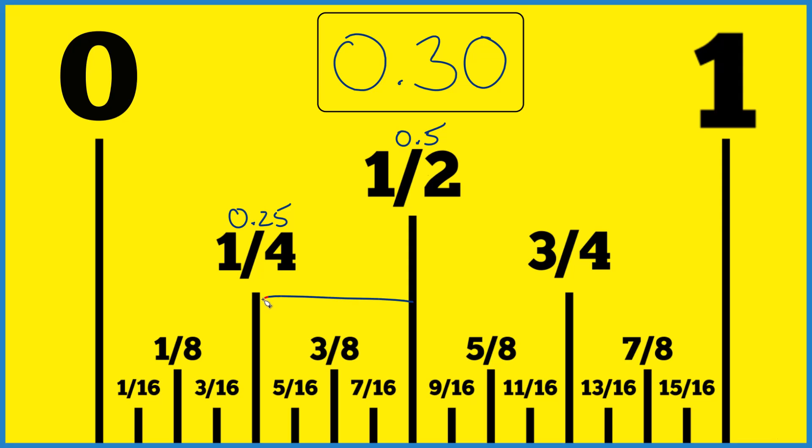So we know it's somewhere in this space right here. So why don't we divide 3 by 8? It looks like it's probably going to be closer to 1 fourth, but let's divide 3 by 8. And that is 0.375.